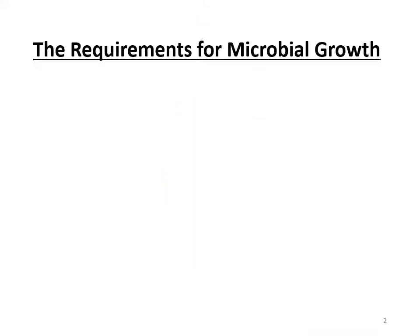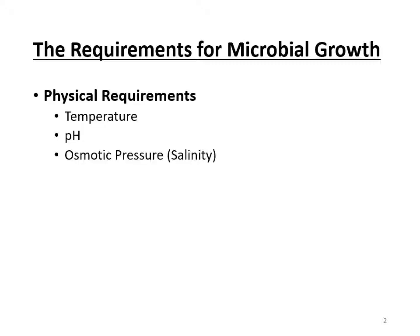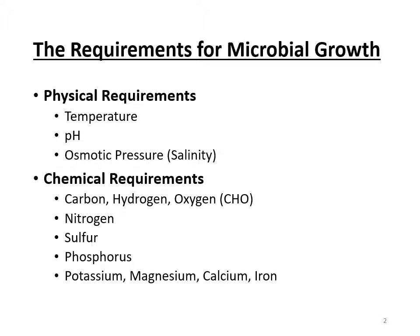When we talk about requirements for their growth, there are two main categories. There are the physical requirements — things such as temperature, pH, and how salty the environment is. And then there are the chemical requirements, and these include things like CHO — carbon, hydrogen, and oxygen — as well as nitrogen, sulfur, phosphorus, and various minerals.